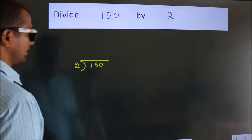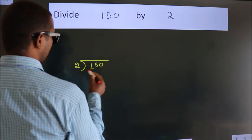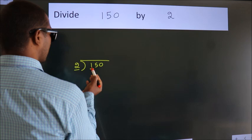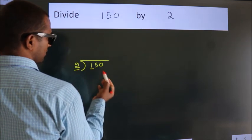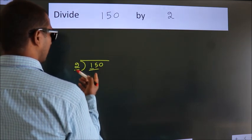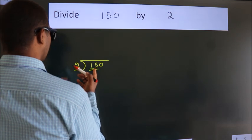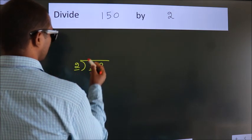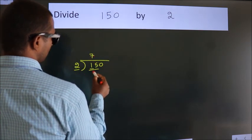Next. Here we have 1, here 2. 1 is smaller than 2, so we should take 2 numbers: 15. A number close to 15 in the 2 table is 2 times 7, which is 14.